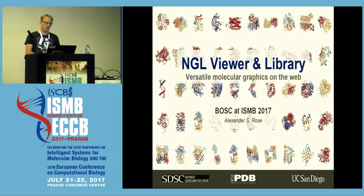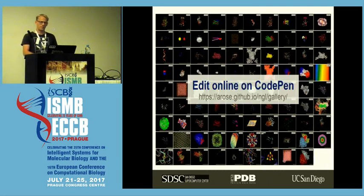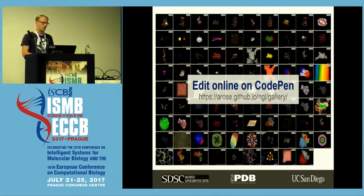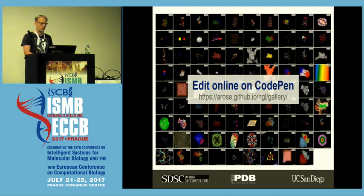This is a summary slide of what you can visually do with NGL. You can go to that URL, and for each of those examples you can click the little button in the top right corner, then edit that example and see the code that generated it in an online editor. It works from small ligand molecules with just a couple dozen atoms all the way to virus capsids with two and a half million individual atoms.